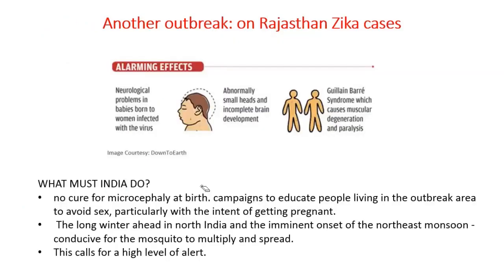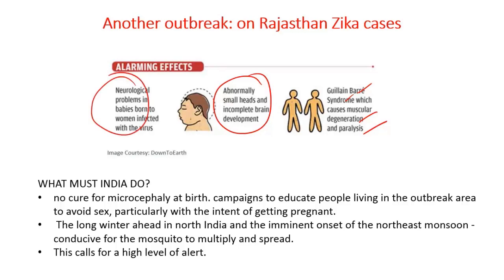Zika virus is associated with microcephaly — abnormally small heads and incomplete brain development — in infants born to infected mothers. Zika virus can also lead to a syndrome called Guillain-Barré syndrome, which causes muscular degeneration and paralysis. It also causes neurological problems to people affected with Zika virus.